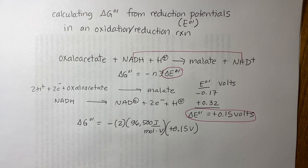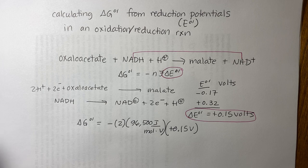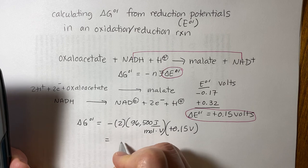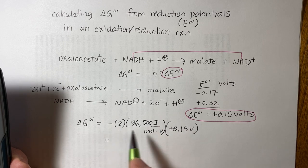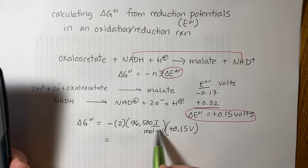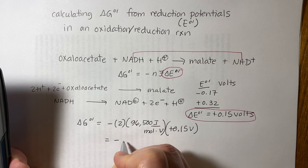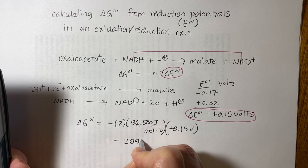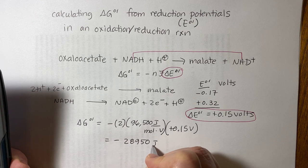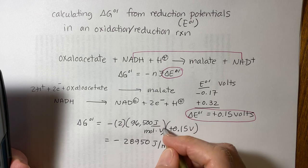So let's do the calculation. And that would come out to be 0.15 times 96,500 times 2. That will equal, it's going to be minus, because this is a plus, plus, minus. So it's going to be minus 28950. And that's joules per mole, because the volts cancel.